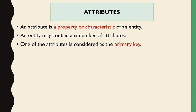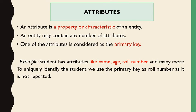One of the attributes is considered as the primary key. The primary key is a unique field — the attribute whose value is not repeated. Those attributes which have a unique value that is not repeated are the primary key. For example, a student has attributes like name, age, and roll number. To uniquely identify the student, we use roll number as the primary key, as it is not repeated.